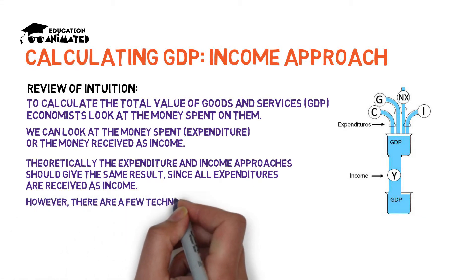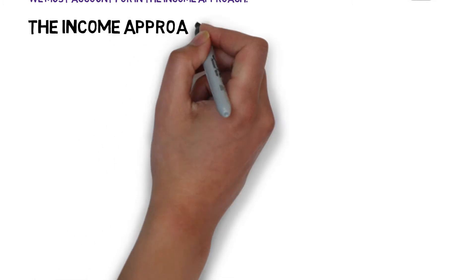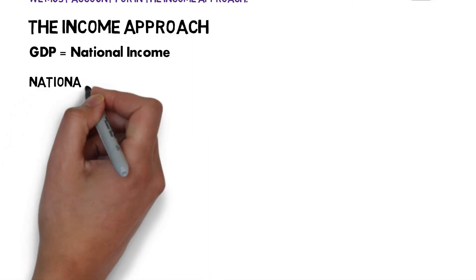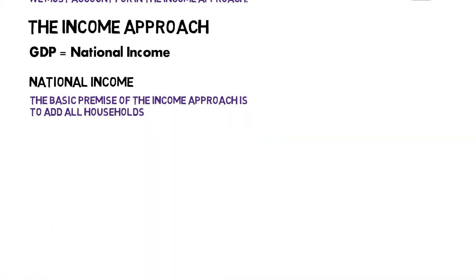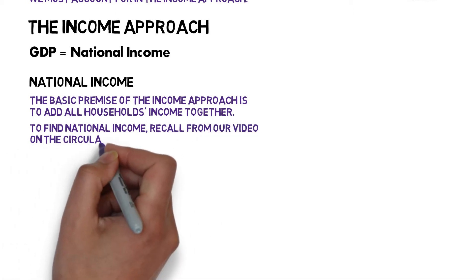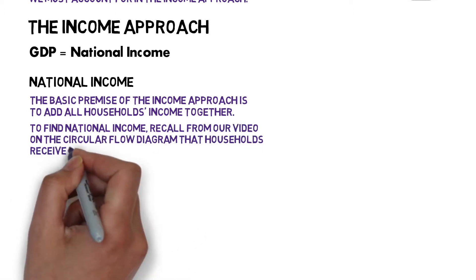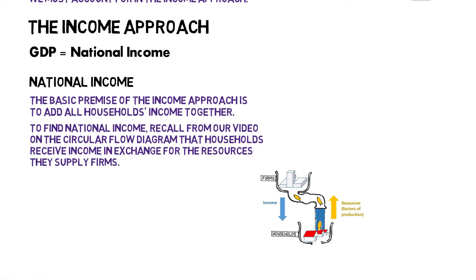However, there are also a few technicalities we have to account for in the income approach, so it's not quite that simple. The income approach begins with GDP being equal to national income, because the basic premise of the income approach is to add all households' income together. To find national income, recall from our previous video on the circular flow diagram that households receive income in exchange for the resources they supply firms. Here's a diagram showing how income flowing from firms is exchanged with resources or factors of production flowing from households.